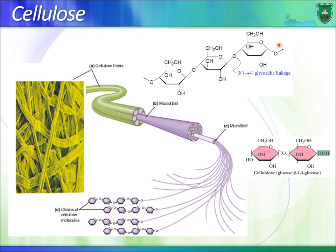In cellulose, the straight chains line up on top of each other, with extensive hydrogen bonding between them, creating a very strong, rigid structure. The beta glycosidic bond is a rigid bond, making the whole molecule rigid — as expected for a structural molecule like cellulose, which forms the stems of plants.